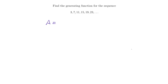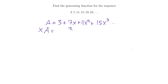I'm going to call my generating function A. Written as a generating series — an infinite power series — it must be 3 plus 7x plus 11x squared plus 15x cubed, and so on. Now to take differences between terms, I need to multiply every term by x, which gives the generating function xA, which is 3x plus 7x squared plus 11x cubed, and so on.